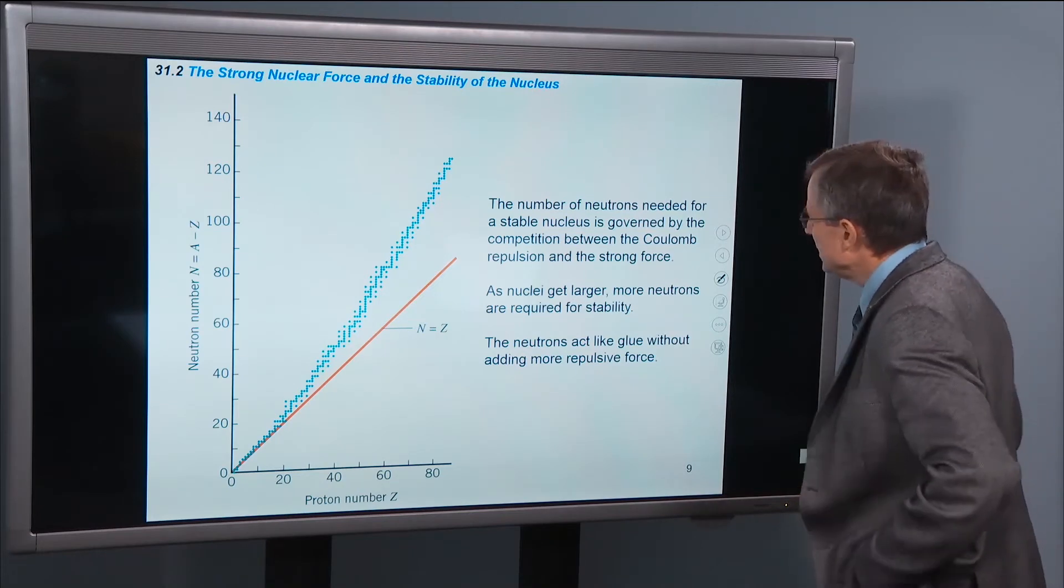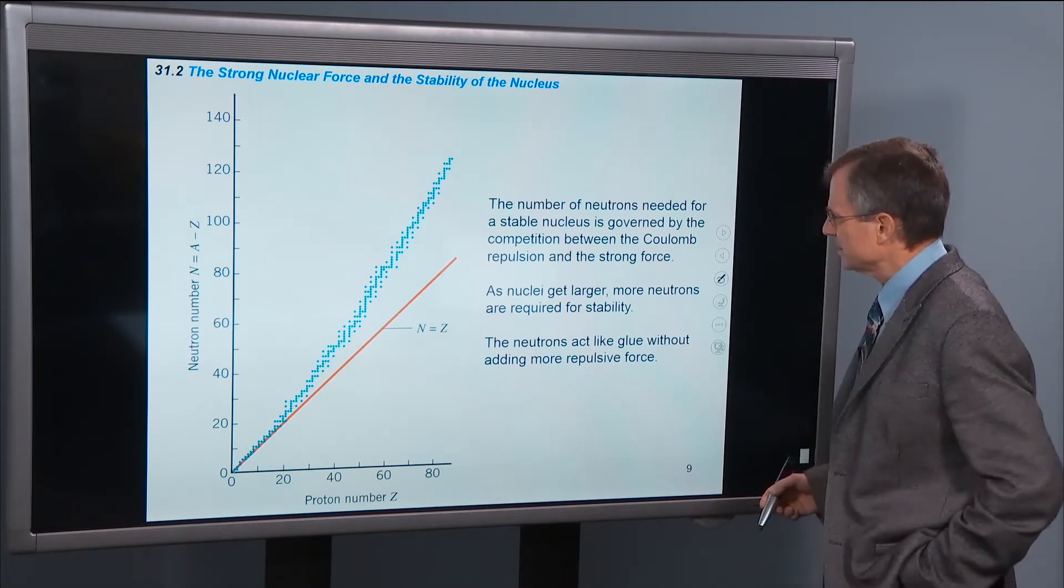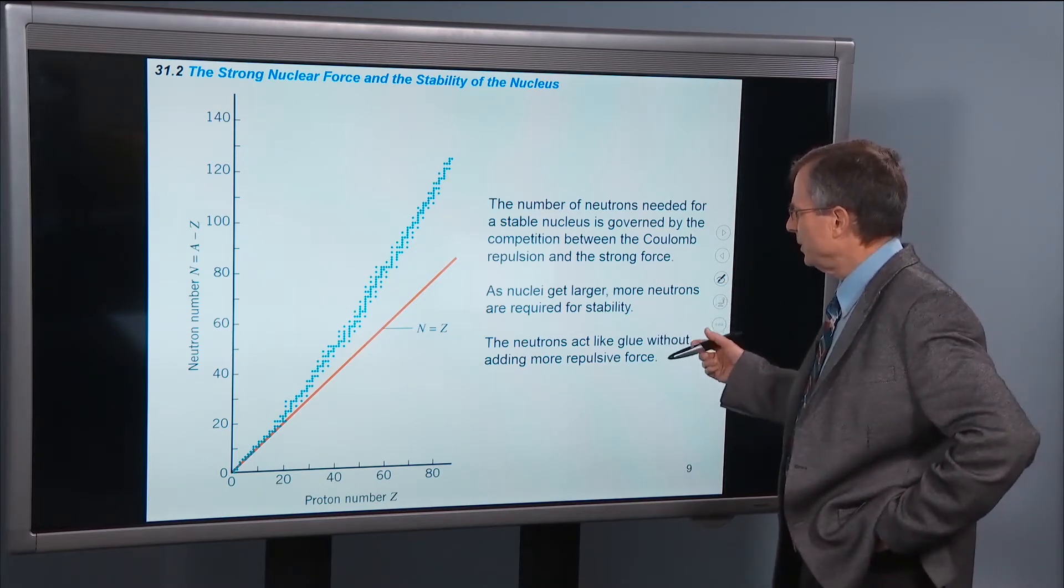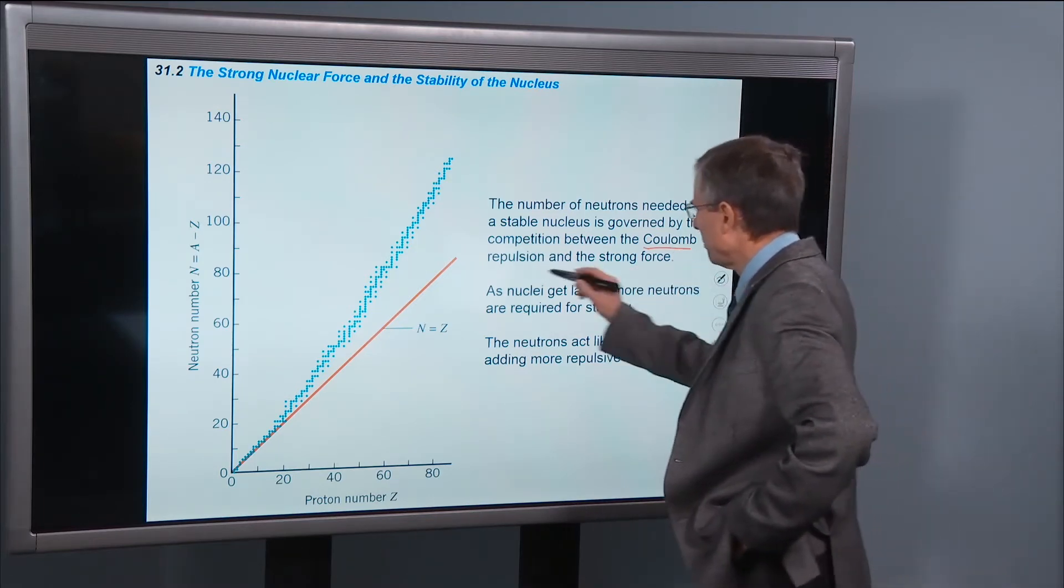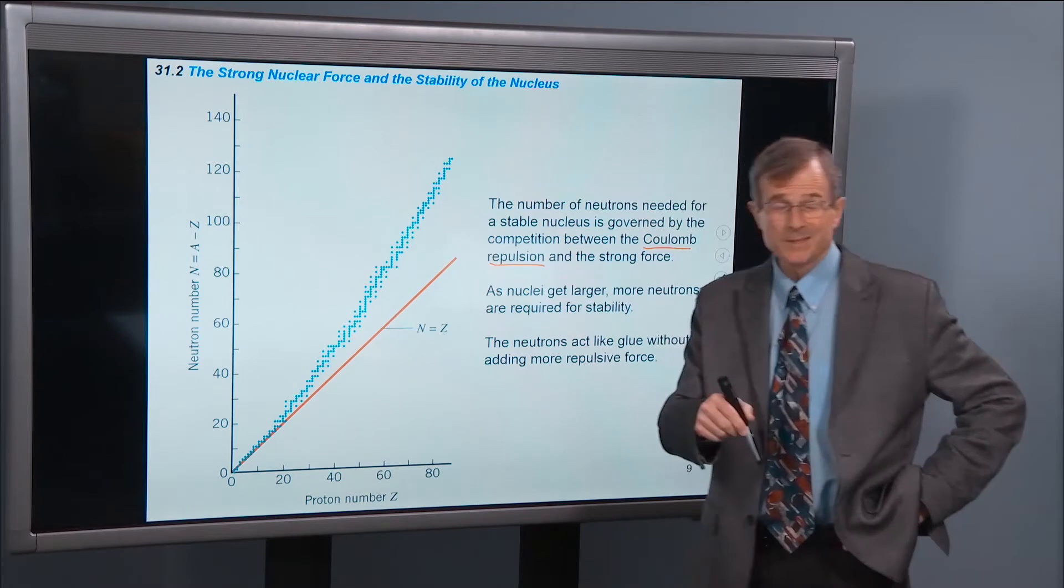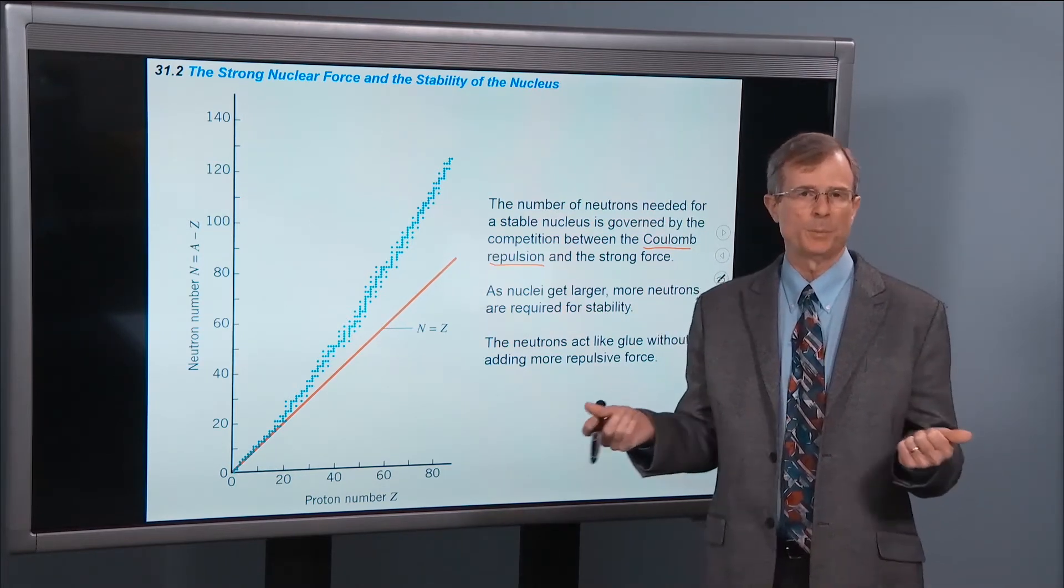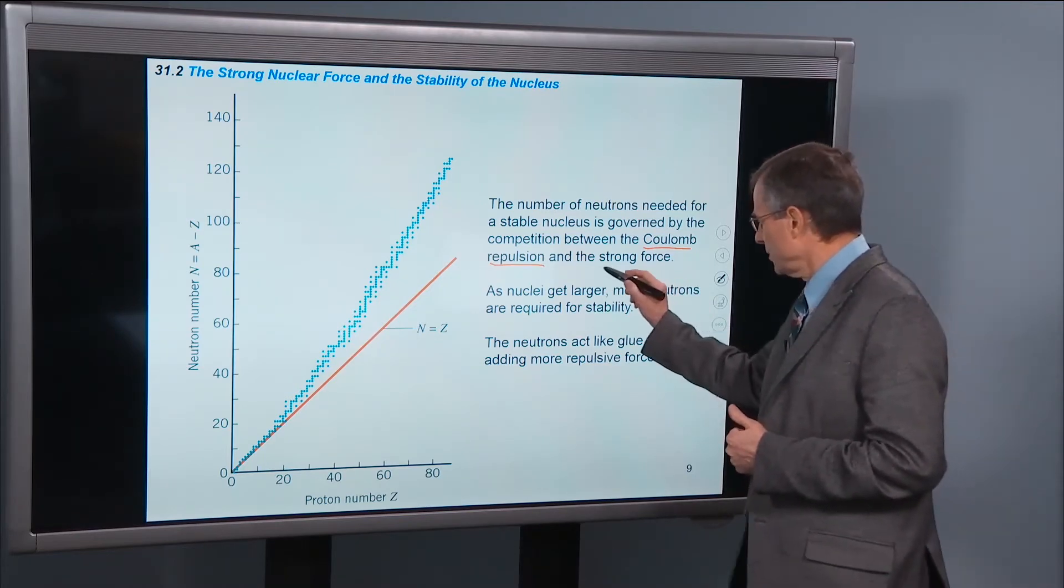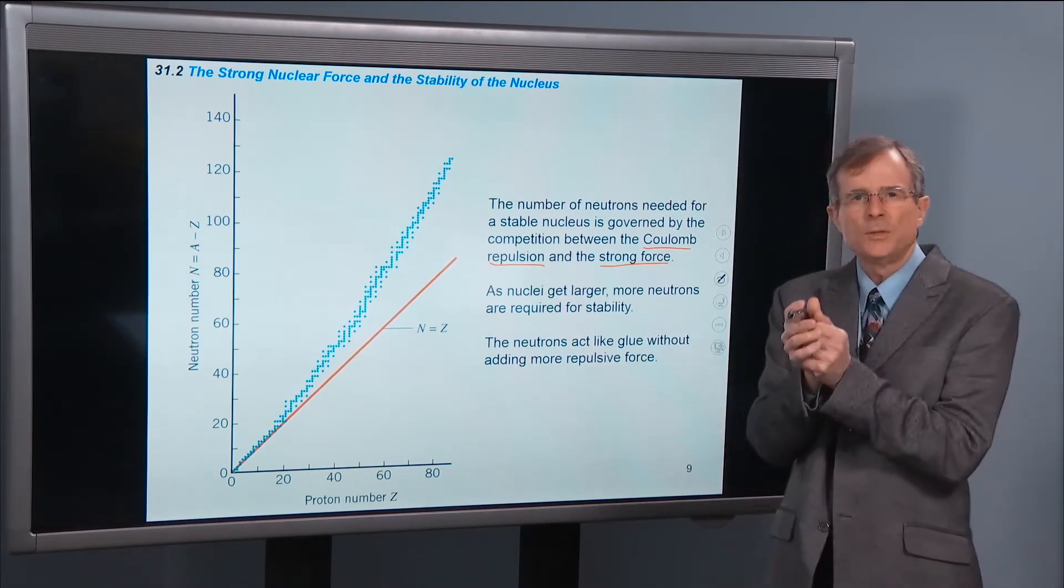The number of neutrons needed for a stable nucleus is governed by the competition between the coulomb repulsion and the strong force. Coulomb repulsion is still present in the nucleus, trying to drive those protons apart, and the strong force draws the nucleus together.